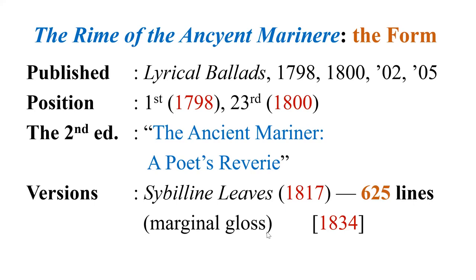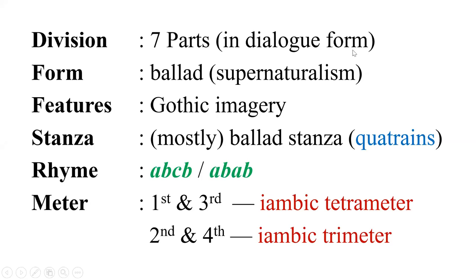Let's go to the proper poem. The poem has seven divisions and is in ballad form — a narrative poem, like a folk song. Coleridge is known for introducing supernaturalism, superstition, and gothic imagery into poetry. A ballad stanza is generally a quatrain — a four-line stanza — with two primary rhyme schemes: ABCB or ABAB.